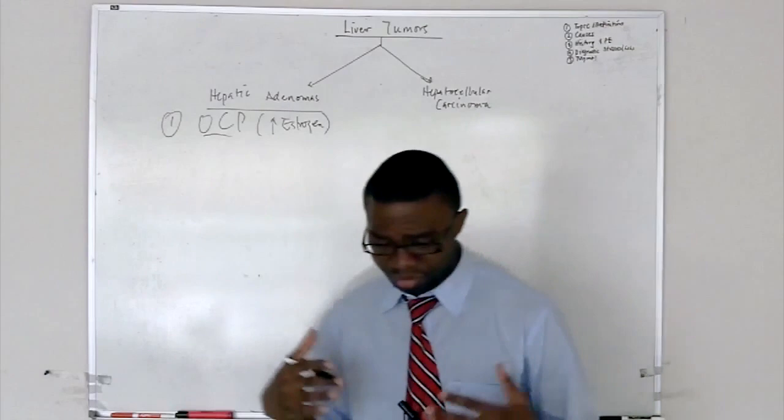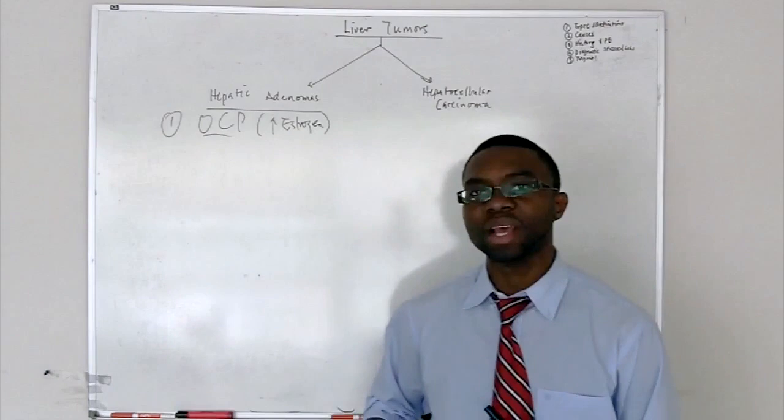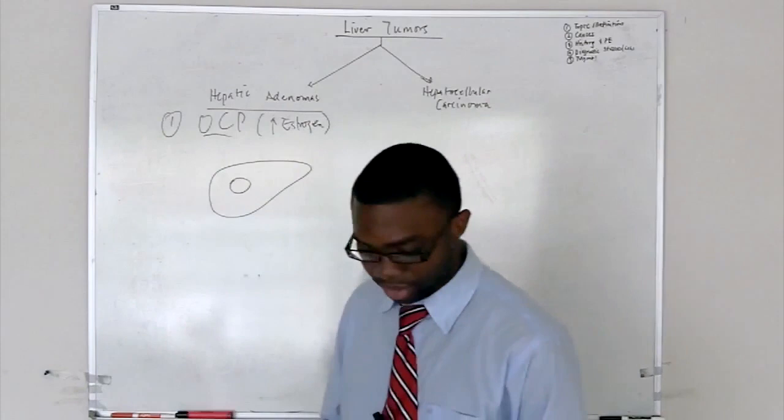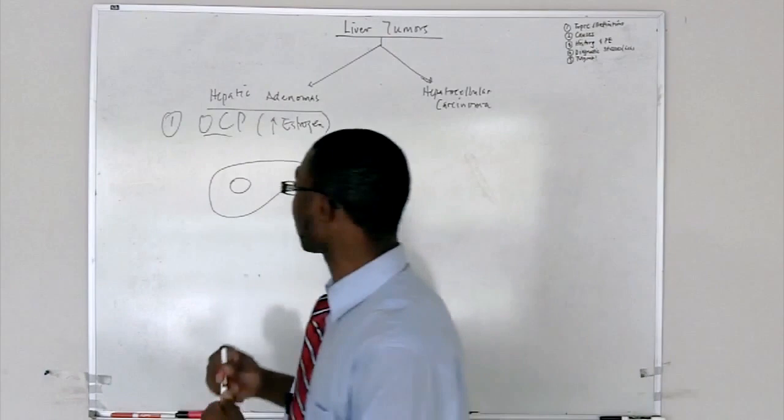So, history and physical wise, it's really nonspecific right abdominal quadrant pain. You really can't get much out of it. You do an ultrasound or a CT scan, and right in the liver, it's nice, well-rounded, homogenous mass, which is going to be an adenoma.